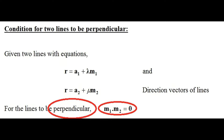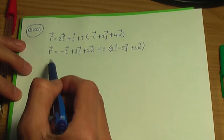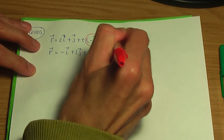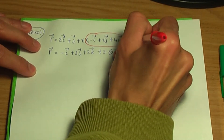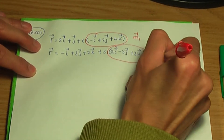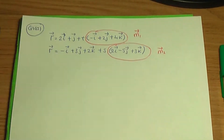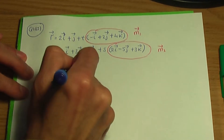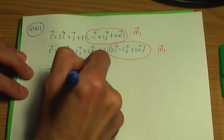If you're unaware of this condition, I have created a video explaining the theory along with examples, and I'll provide a link in the description below. So here are the given vector equations of the lines. Let's look at the direction vectors — I'll name them m1 and m2. So let's calculate m1 dot m2, the scalar product of m1 and m2.